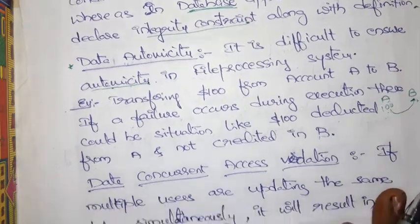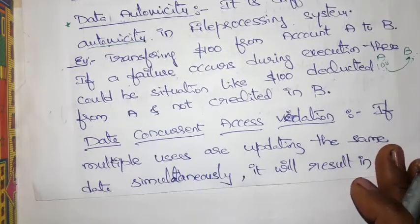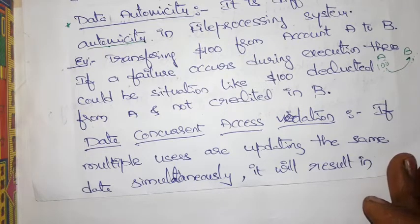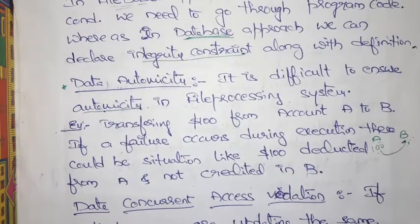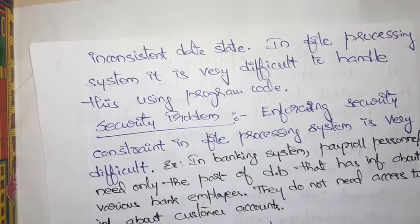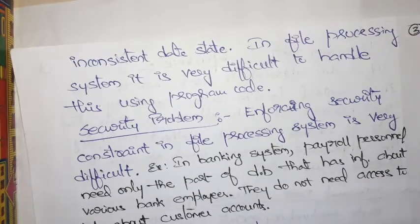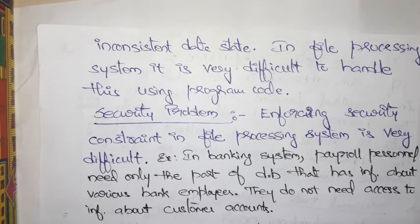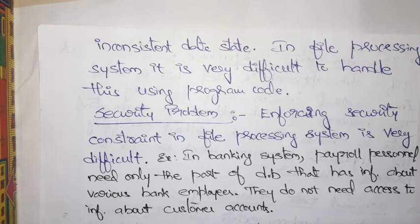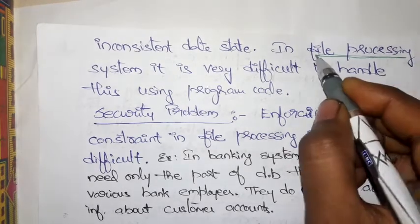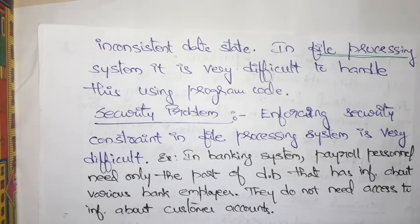Next is data concurrent access violation. If multiple users are updating the same data simultaneously, it will result in an inconsistent data state. In a file processing system it is very difficult to handle this using programming code. Multiple users accessing the same data simultaneously may result in an inconsistent system state.